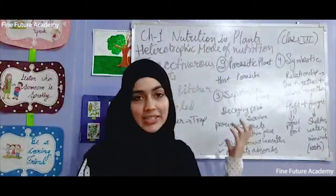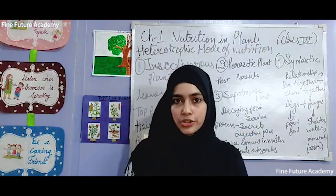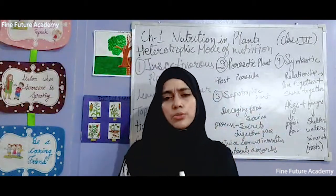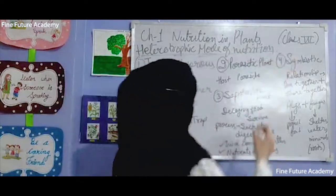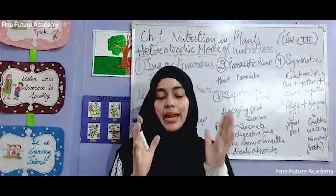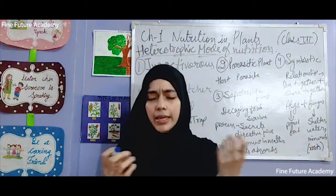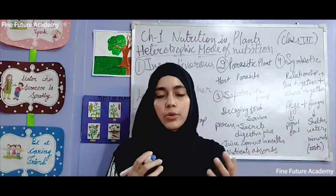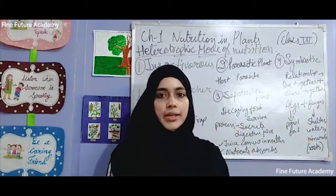Hi, so let's continue with the next topic. We were studying autotrophic mode of nutrition and heterotrophic mode of nutrition. In autotrophic, the whole photosynthesis process was covered, which you can watch in my previous videos. So the next topic is heterotrophic mode of nutrition — organisms that depend on others for their food. Like we depend on plants and animals for our food; our body can't make its own food.